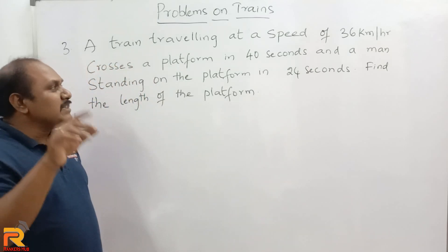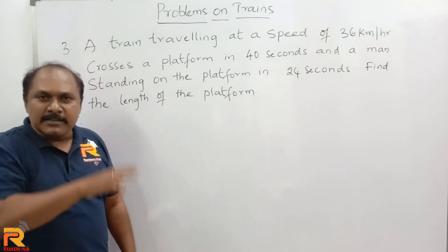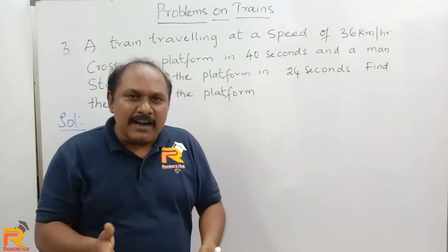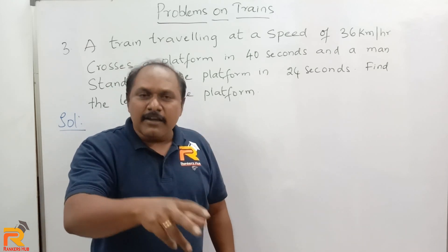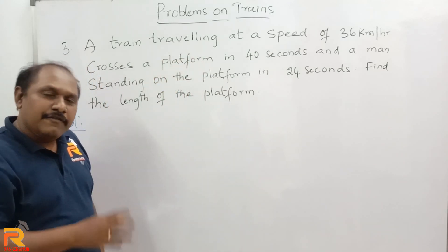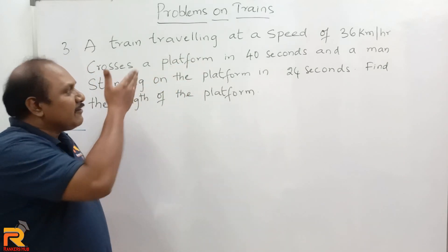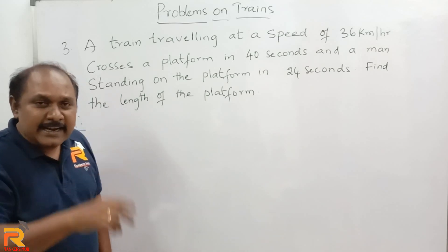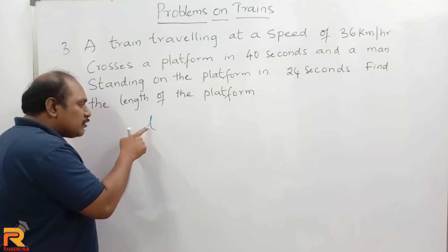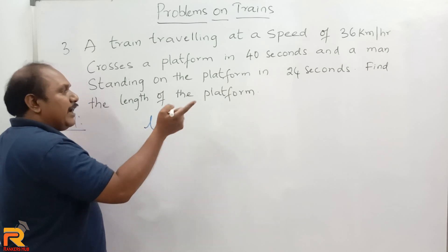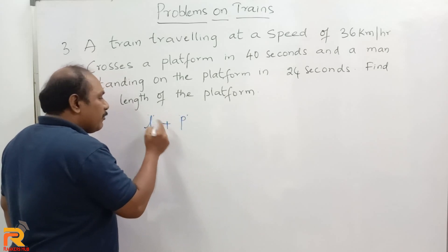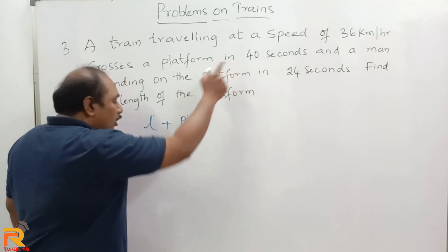My question to you is: what is the train doing in 40 seconds? If you say it is simply crossing a platform, you will not get the answer. Think again. In 40 seconds, the train is traveling a distance equal to the length of the train plus the length of the platform. If I assume the length of the train is L, it travels L plus P meters in 40 seconds.